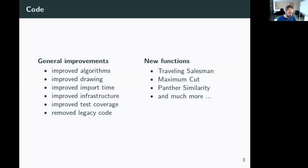One of the major things we did was code improvements: fixing bugs in algorithms, speeding up algorithms, improving our drawing utilities. In particular, we now have the ability to draw self-loops. We've reduced the amount of time it takes to import NetworkX. We've made major improvements to our testing and documentation infrastructure, improved test coverage, and removed legacy code. Despite having been around for almost two decades, there were some major algorithms still missing. We addressed that this year — putting in our first algorithms for Traveling Salesman (Christofides' classical approximation algorithm) and Max Cut (random partitioning plus heuristics). We've also added Panther similarity for computing similarity between nodes or vertices in a graph.